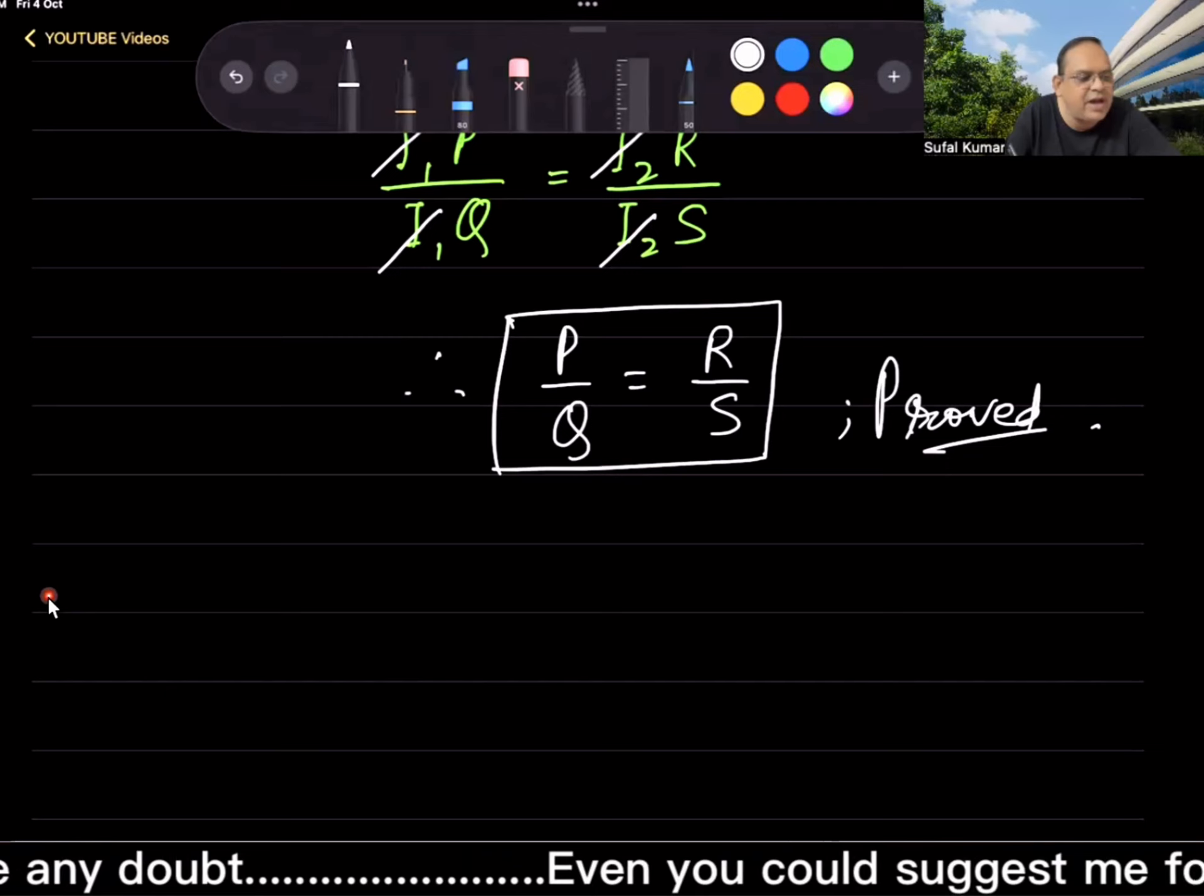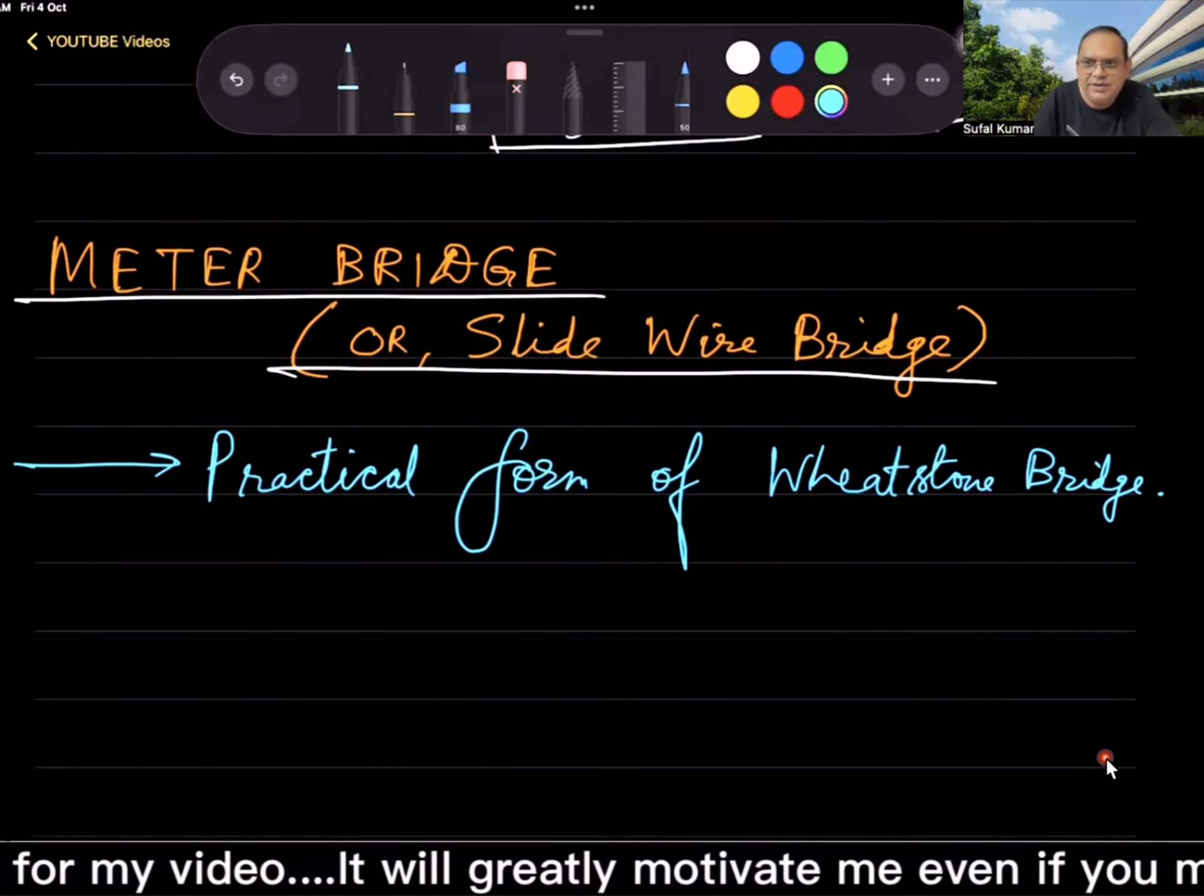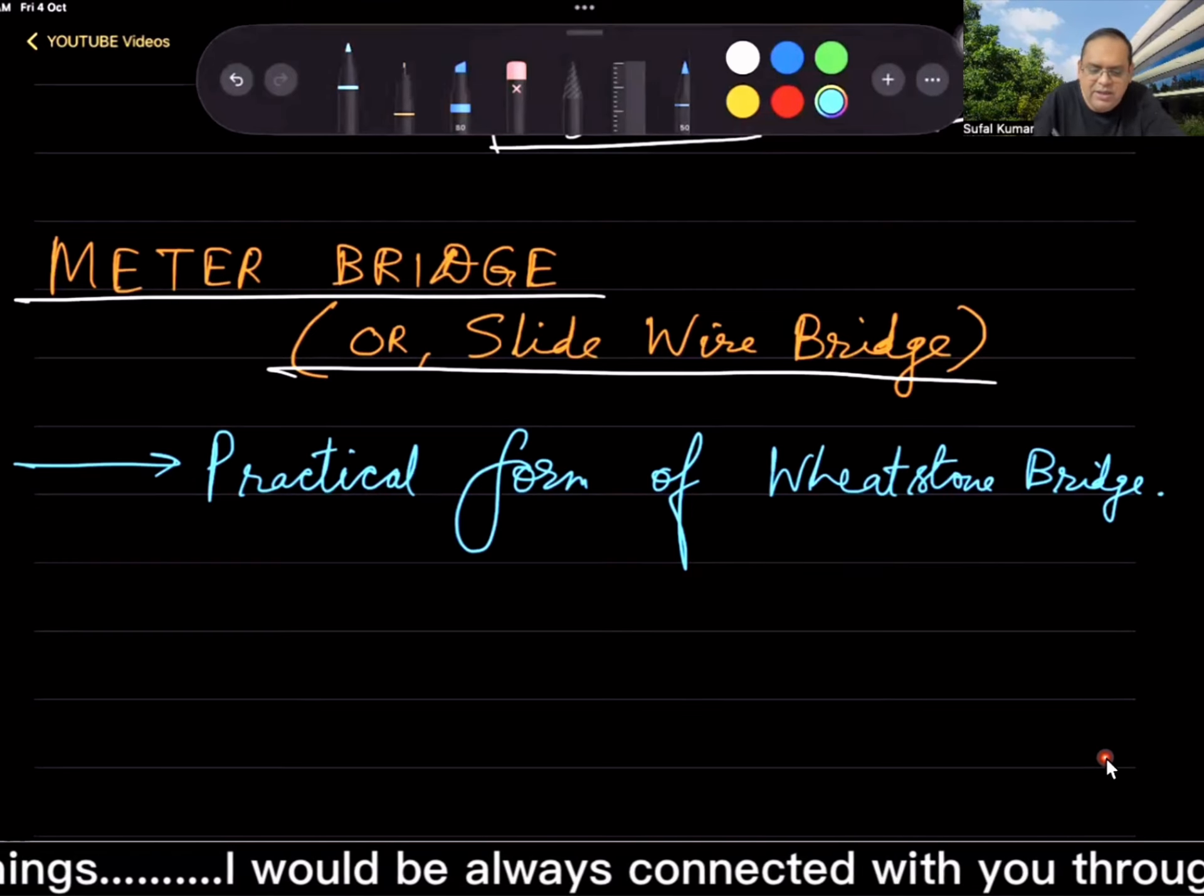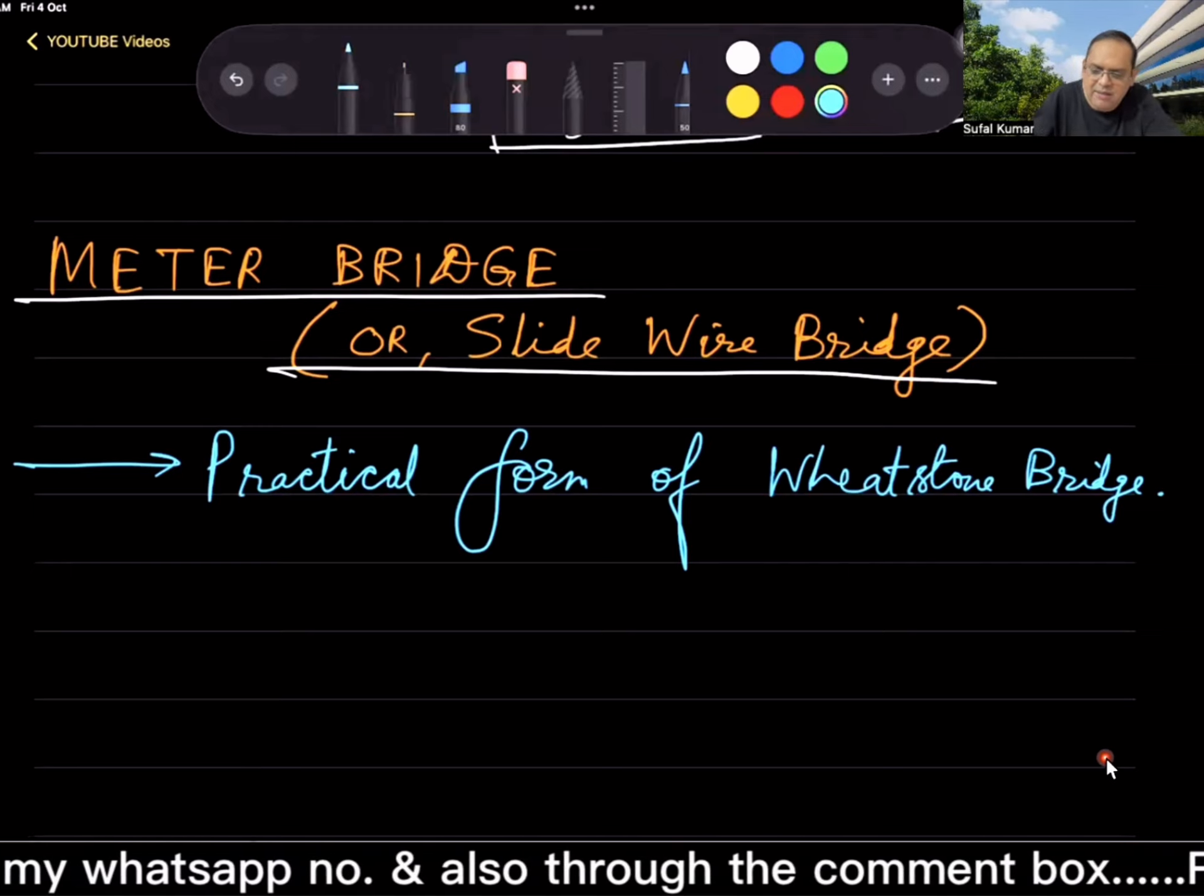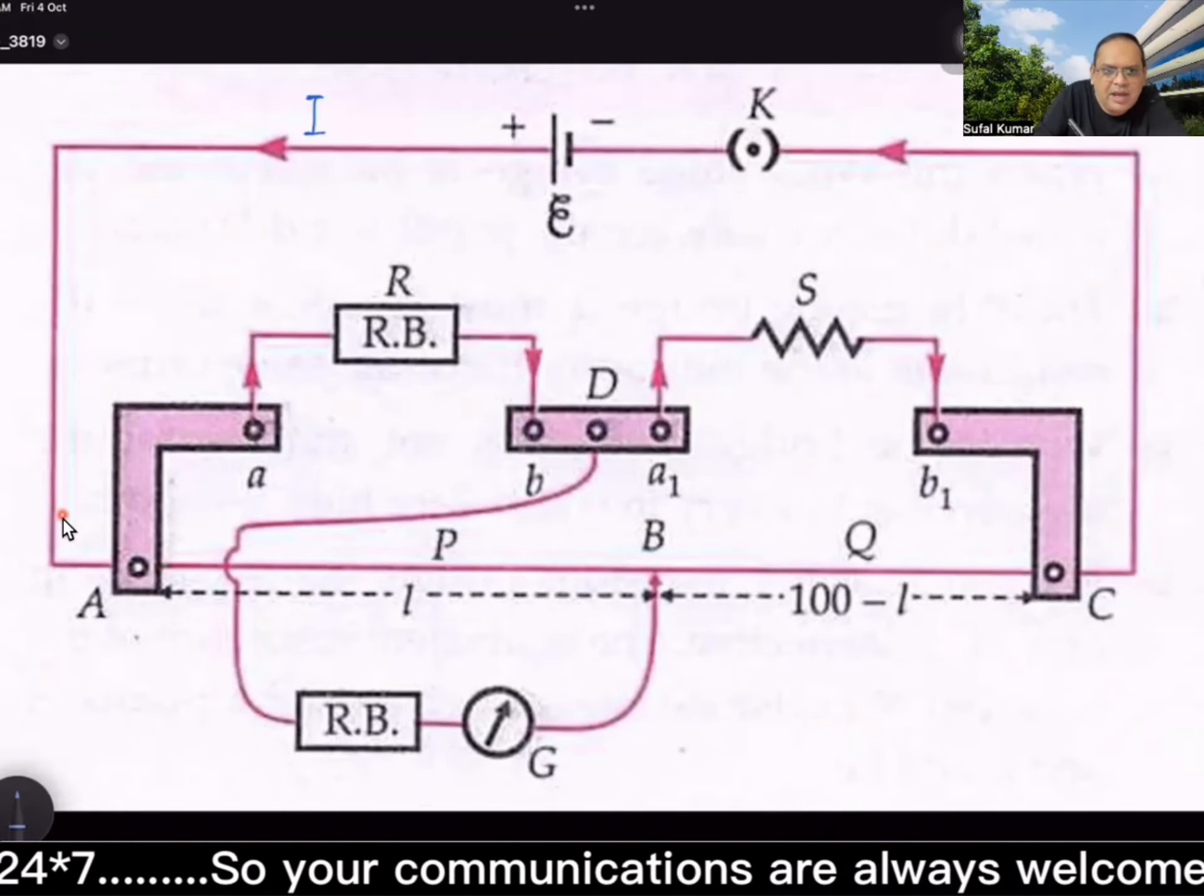Then here comes meter bridge or slide wire bridge. First most important point: this meter bridge is the practical form of Wheatstone bridge. Another point of interest is why it is also named as slide wire bridge. For this to understand, we need to consider the primary circuit diagram for meter bridge.